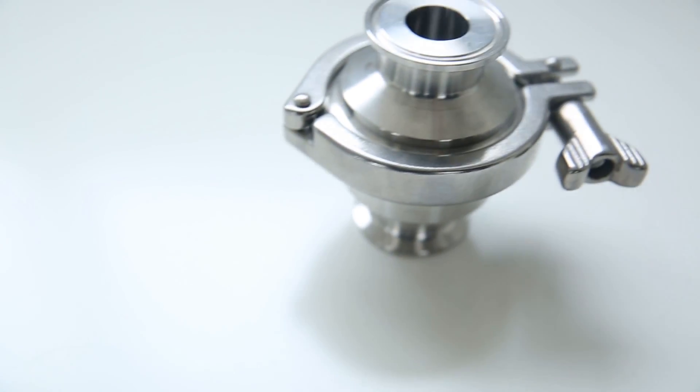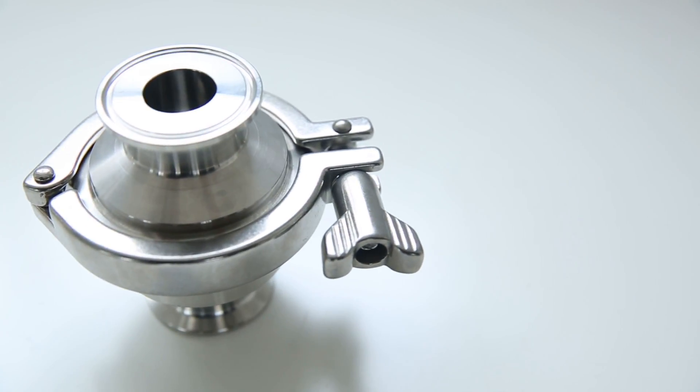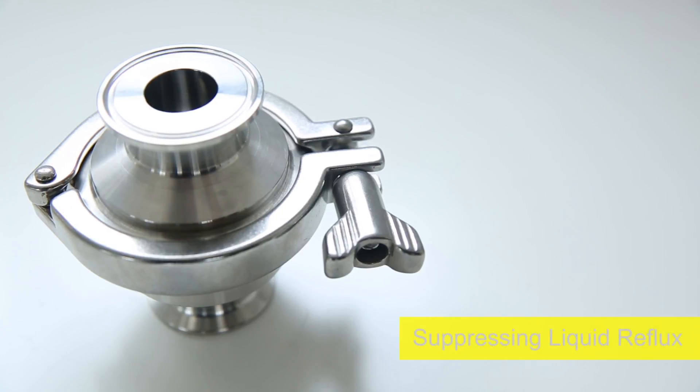Seekens Sanitary Check Valves are installed in pipeline equipment with different media materials, controlling fluid for one-way circulation and suppressing reflux.